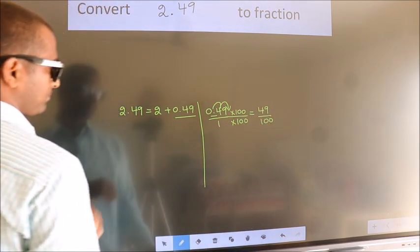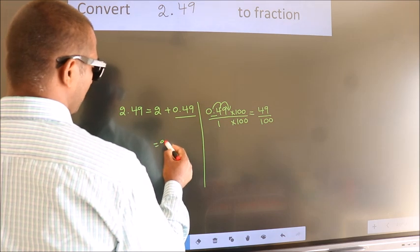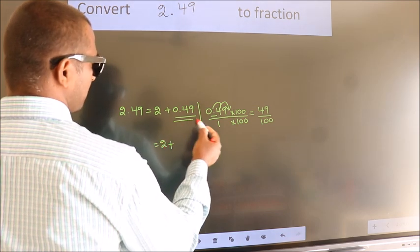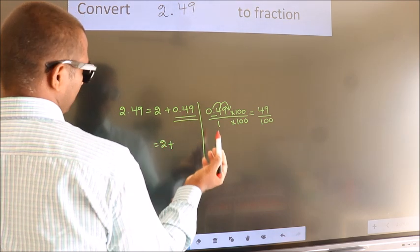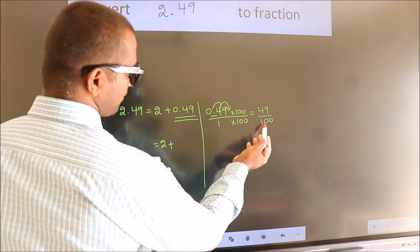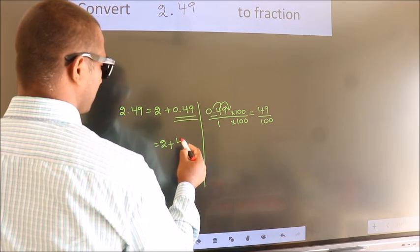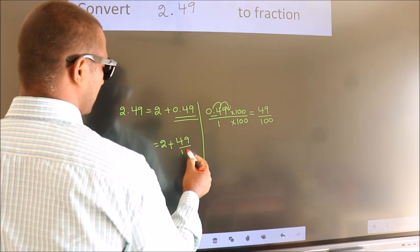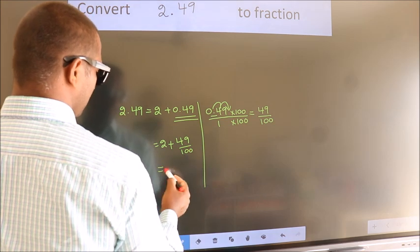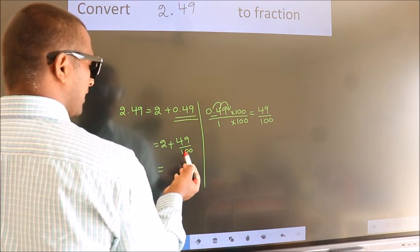Now here, 2 plus in place of 0.49, now we write this fraction. 49 by 100. 2 plus 49 by 100.